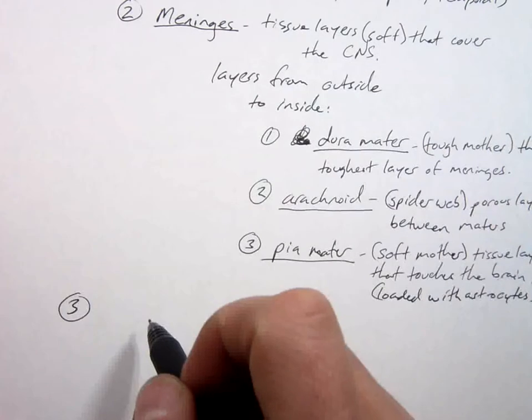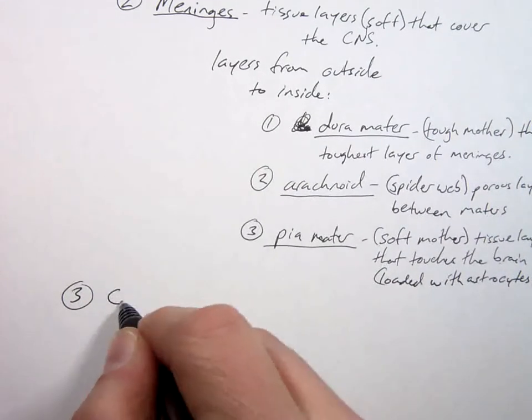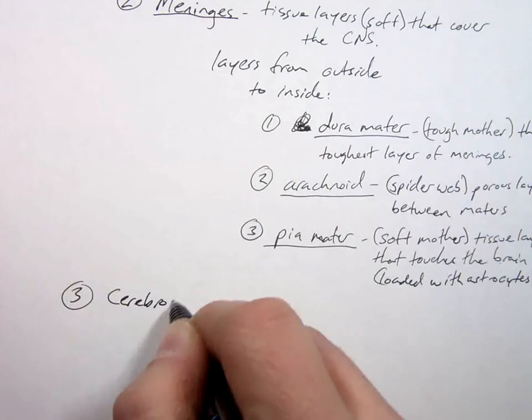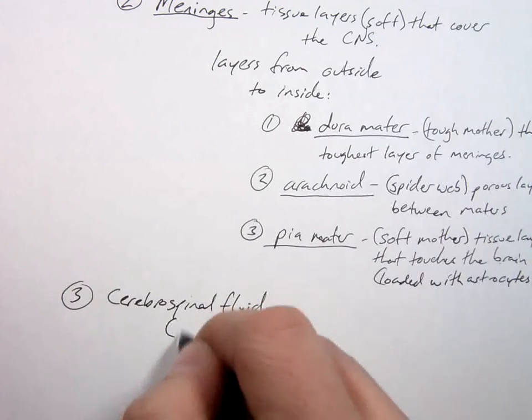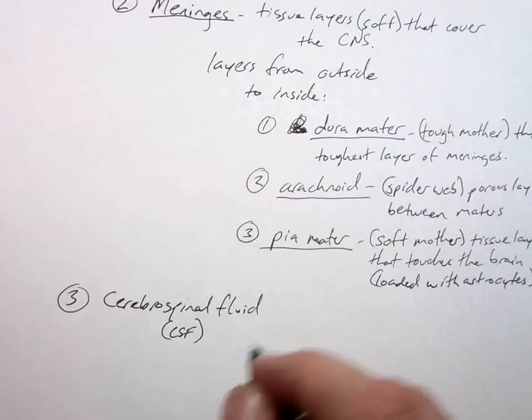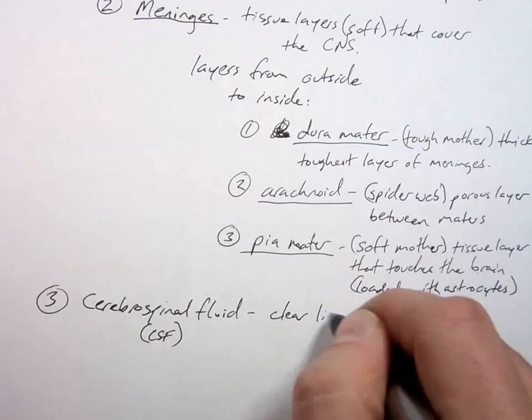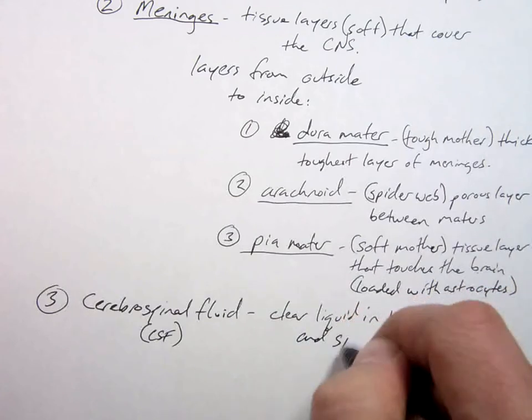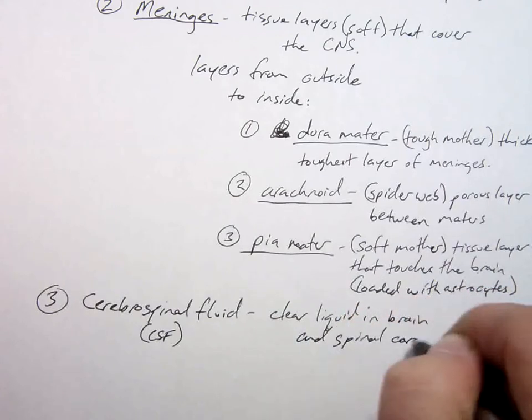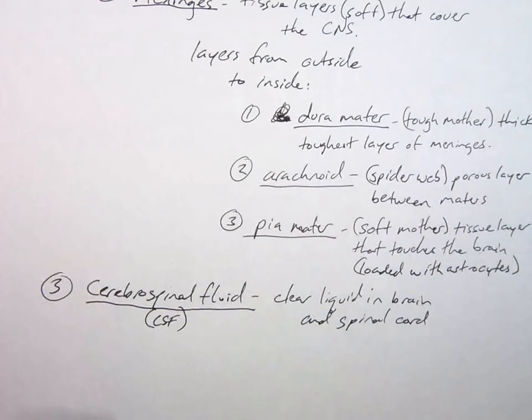So we went from thick hard tissue to thinner softer tissue to liquid. What's this? Cranial fluid. It's called cerebrospinal fluid, abbreviated CSF. It's a clear liquid in the brain and spinal cord.